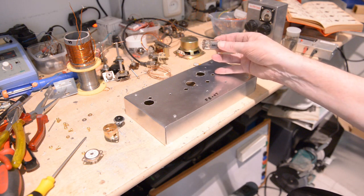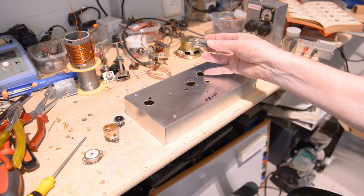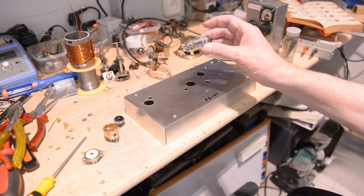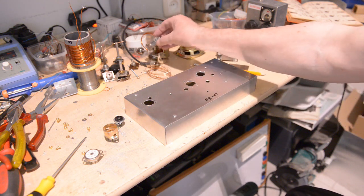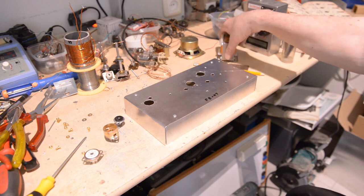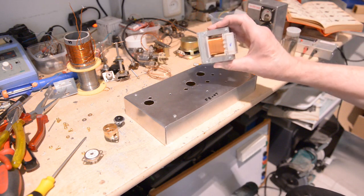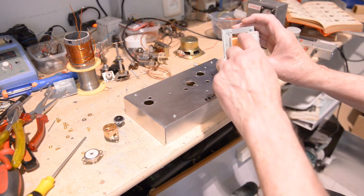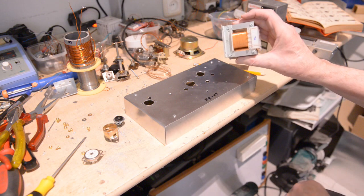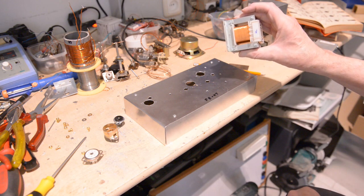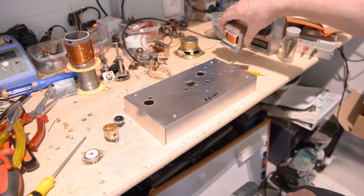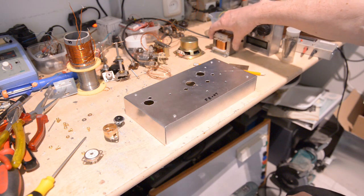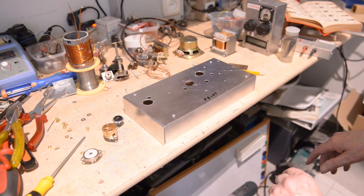The only thing we have to take into account is the current the filaments draw. But in this transformer there is plenty of room. I put a thicker wire, a 19 wire that gives you up to 2 amps and that will suffice for the 6.3 volts for the filaments.